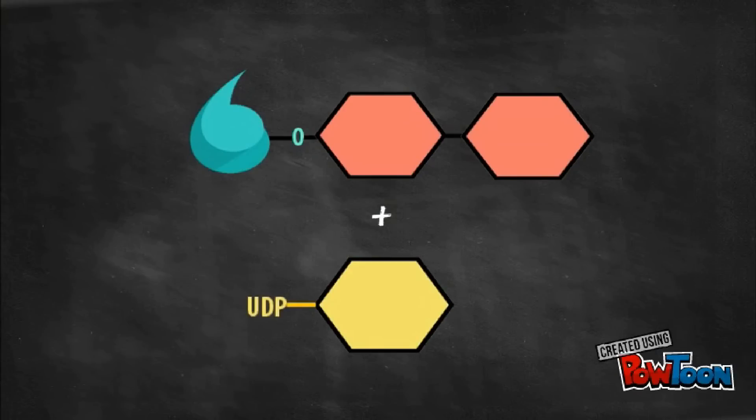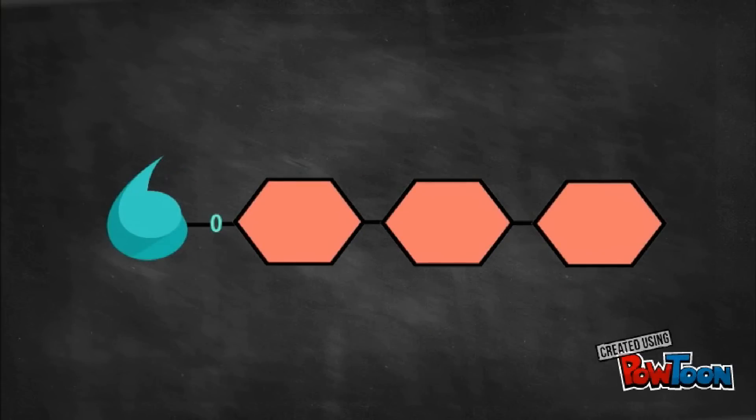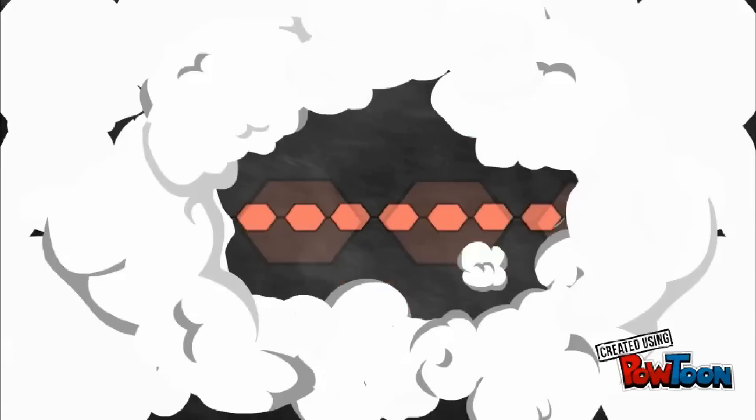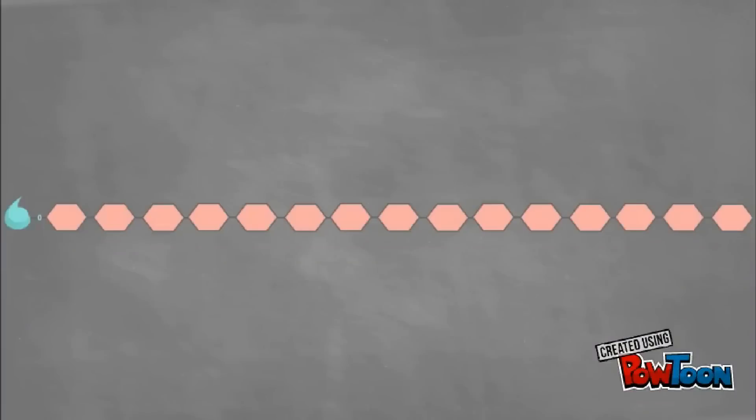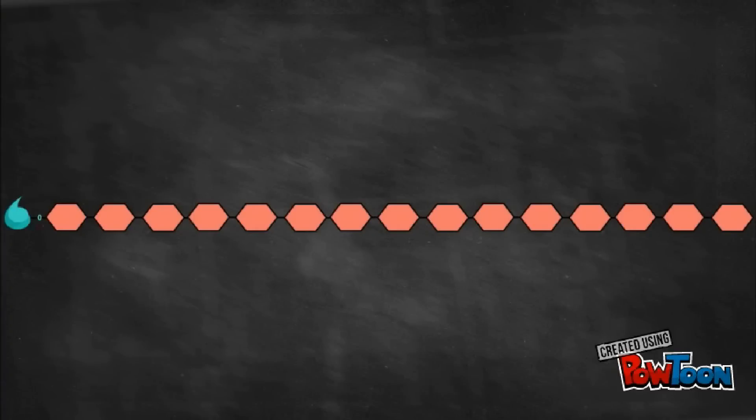Step 3, elongation of glycogen chains. You can now add molecules of glucose from UDP glucose at the non-reducing end to elongate the chain via glycogen synthase. It is the enzyme responsible for making the alpha-1,4-linkages in glycogen.